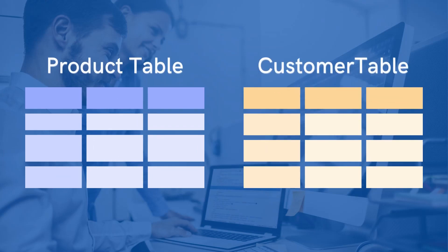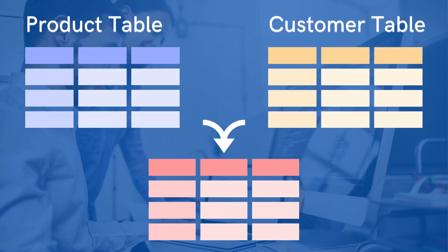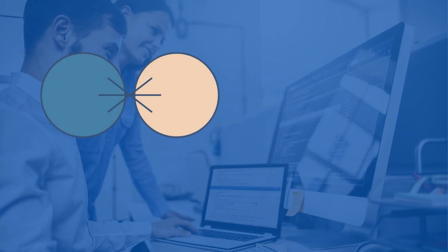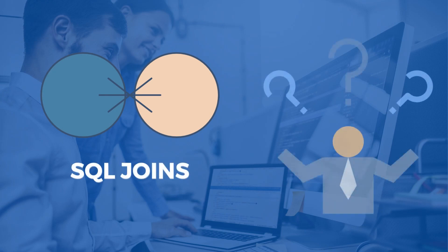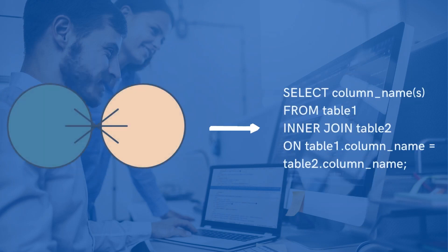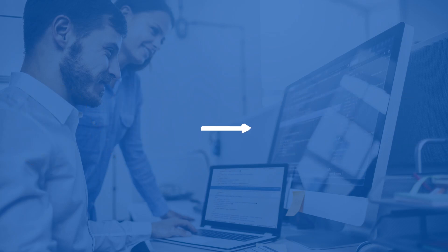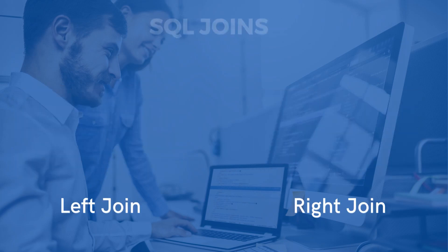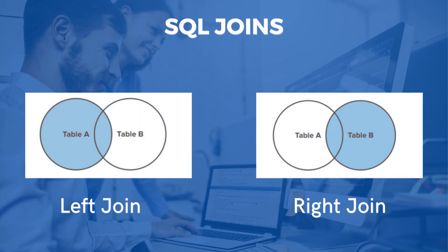How do we get data from multiple tables? We have a concept called joins. We'll see what exactly joins are, and later we'll see how to implement them using code. Before we go with the joins concept, there are around five to six types of joins which we use in real time.